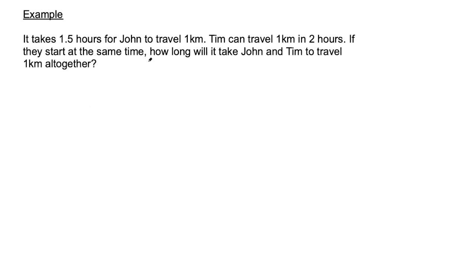This problem says it takes 1.5 hours for John to travel one kilometer. John is a snail — that's why he's going so slow. Tim can travel one kilometer in two hours. Tim is also a snail, and Tim is traveling even slower than John. The question says: if they start at the same time, how long will it take John and Tim to travel one kilometer altogether?